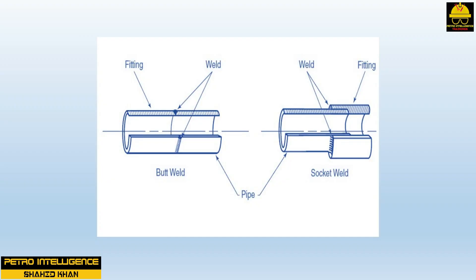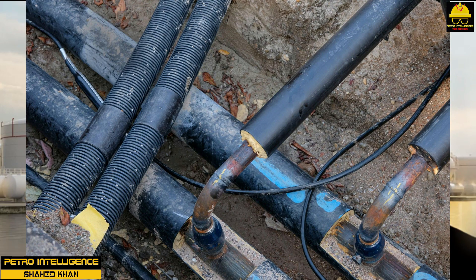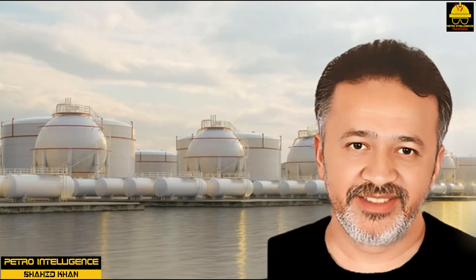Two types of welding may join piping. In butt-welded piping, the parts to be joined are the same diameter and are simply welded together. In socket-welded piping, the pipe is inserted into a larger fitting before being welded. Socket-welded fittings are usually used in 2-inch size and smaller because there is less possibility that stray weld metal will obstruct the flow area. Butt welding is used in all sizes, but particularly in 2-inch size and larger.